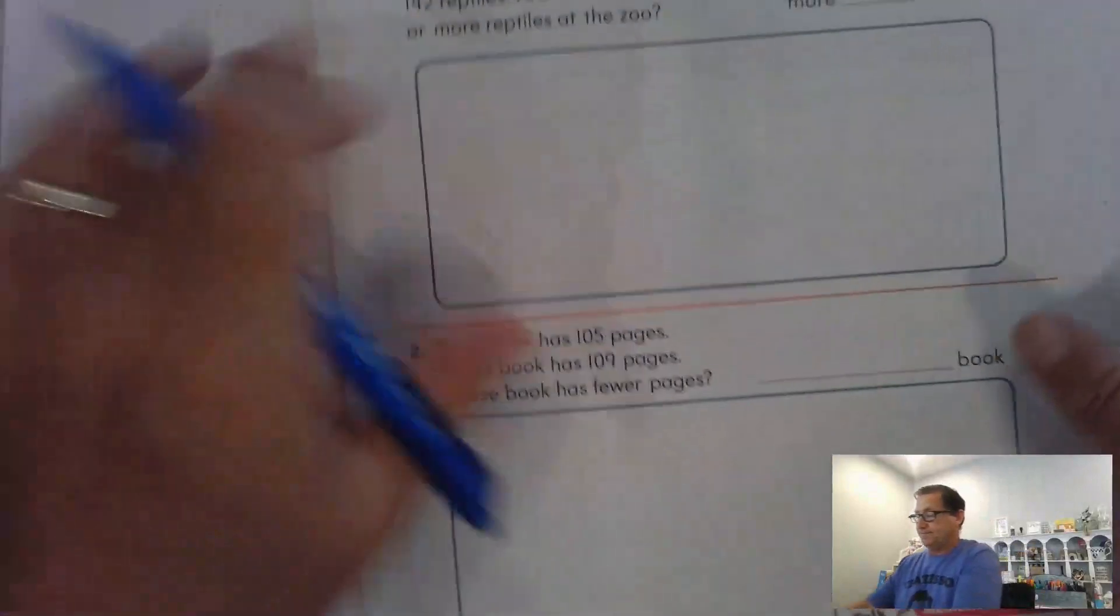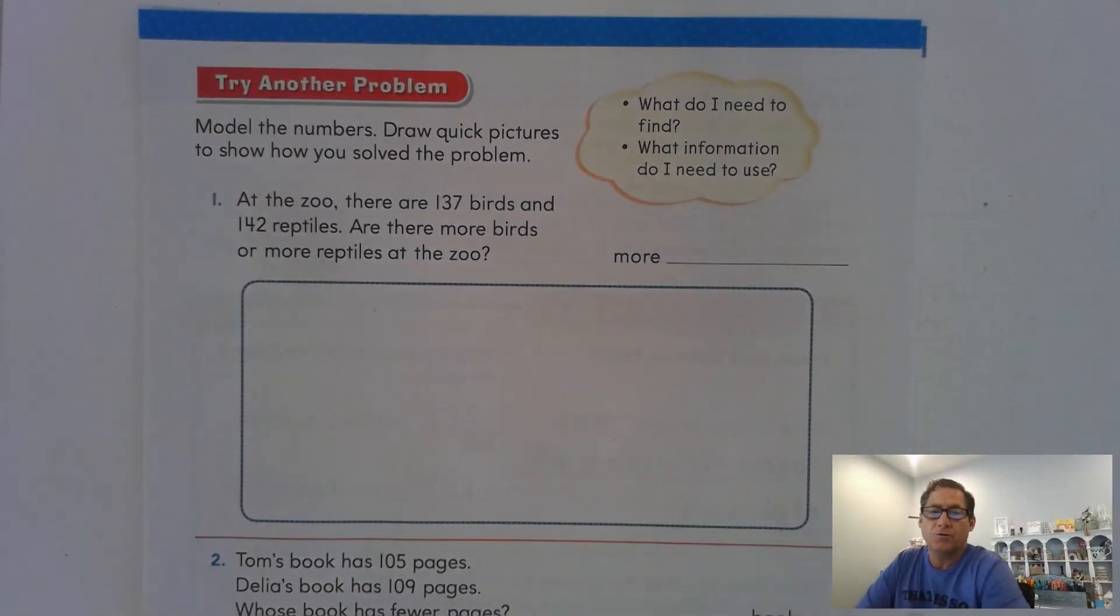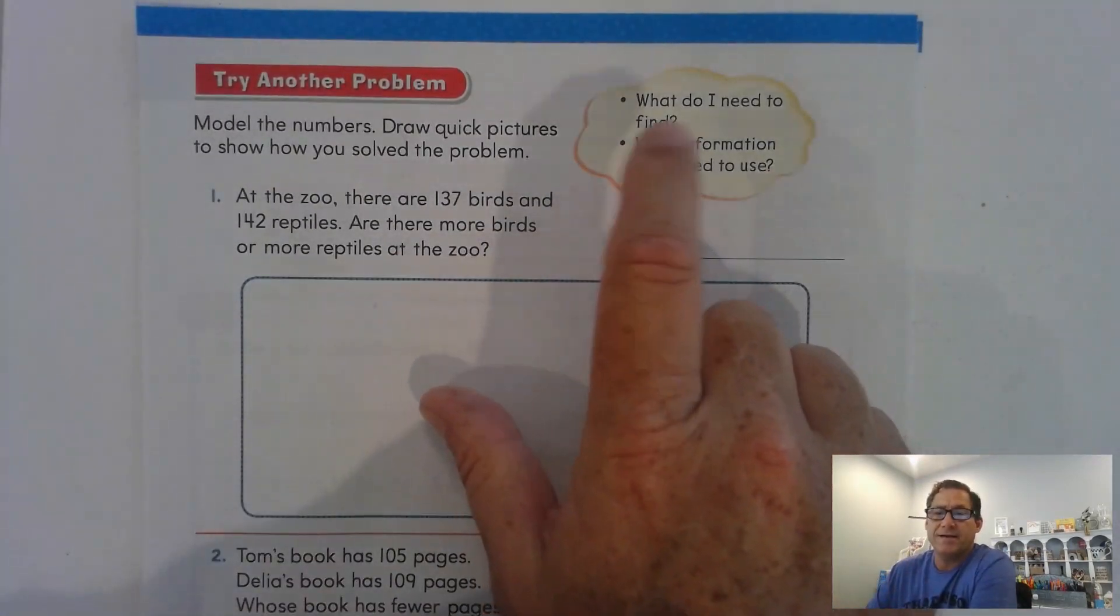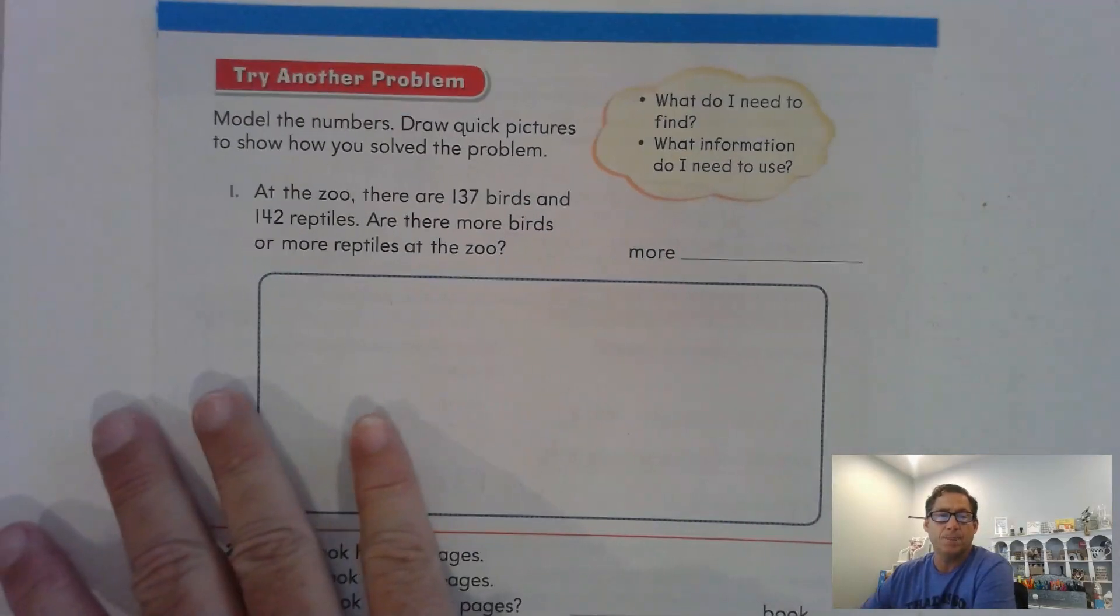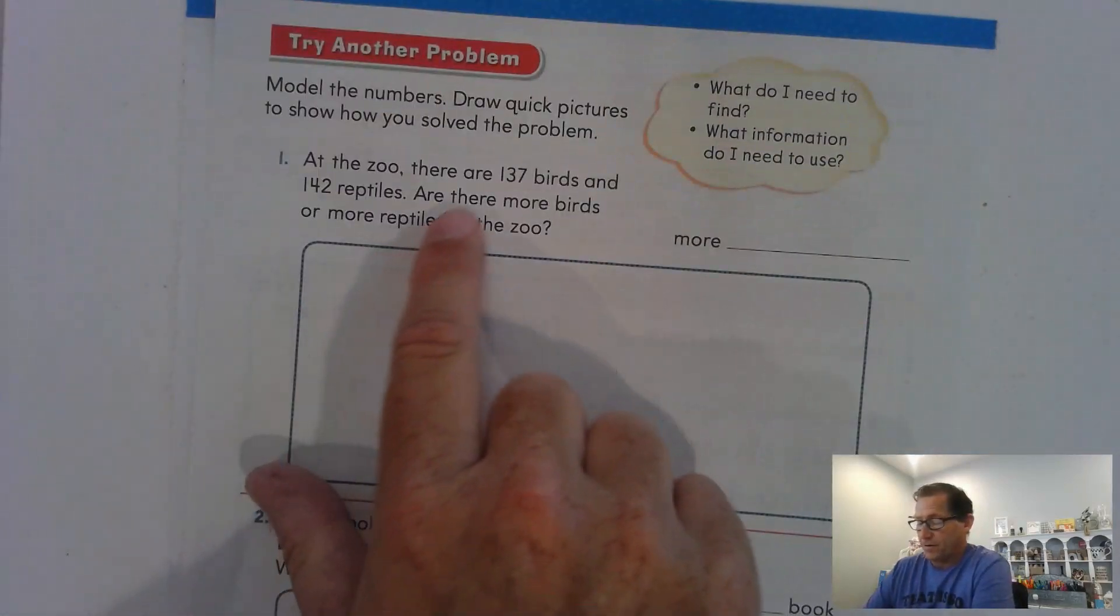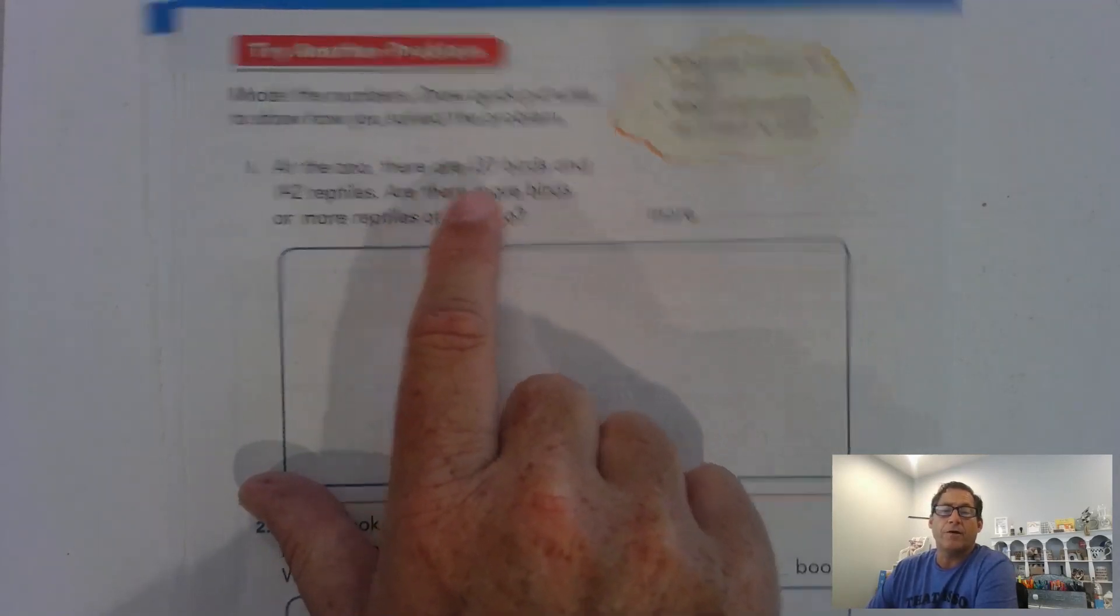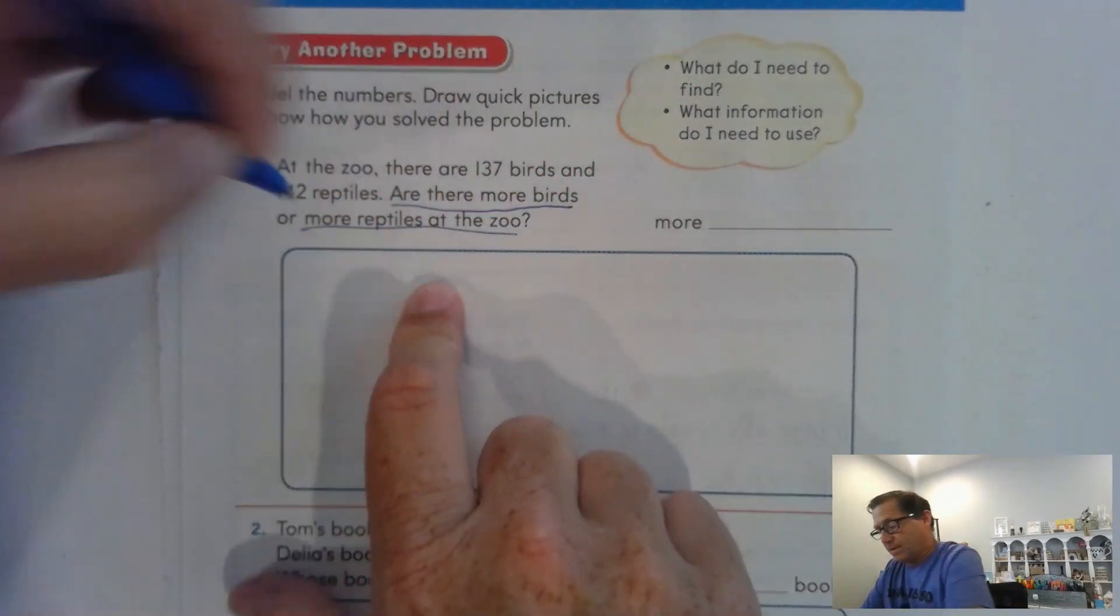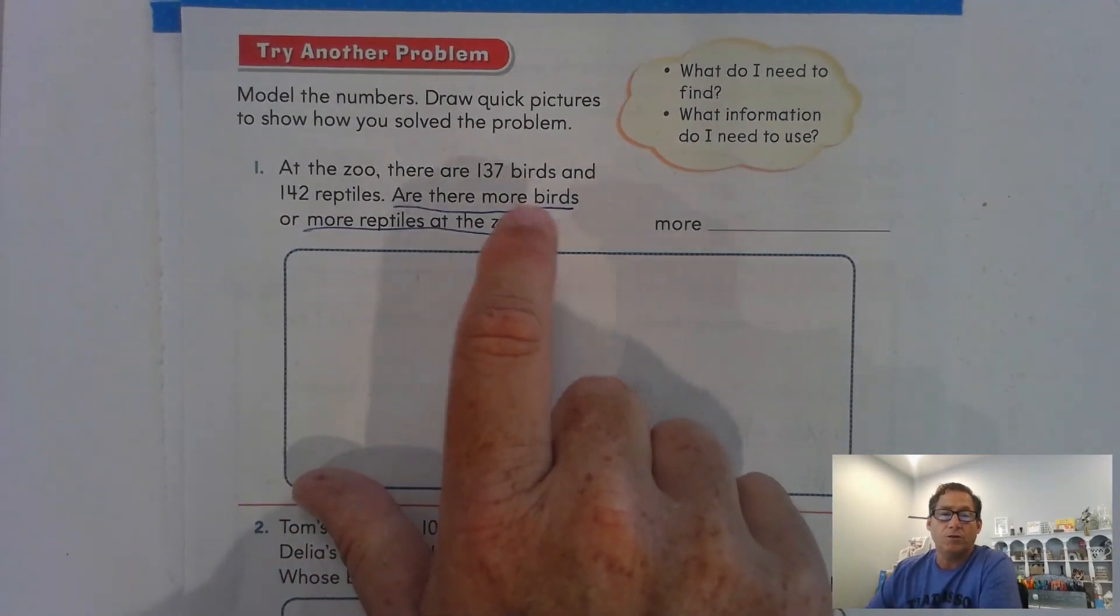Let's go to page 98. Model the numbers and draw quick pictures to show how you solve the problem. Remember, keep in mind, what do I need to find? What's the question asking me? And what information do I need to use? What important numbers do I need to know? So at the zoo, there are 137 birds and 142 reptiles. Are there more birds or more reptiles?